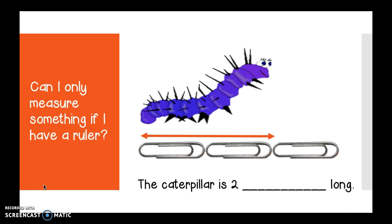So I could say, the caterpillar is two blank long. He's two... No, no. Not centimeters. I don't use centimeter cubes. He's two paperclips long. That way, say I wanted to tell Mrs. Staff how long my caterpillar is, I could just tell her he's about as long as two paperclips. And then she would know exactly how long he is. So I guess that answers my question. Can I only measure something if I have a ruler? The answer is no.